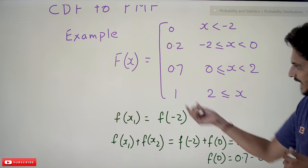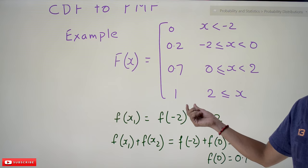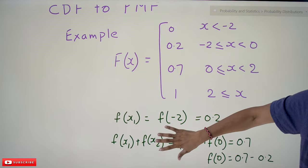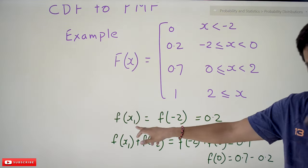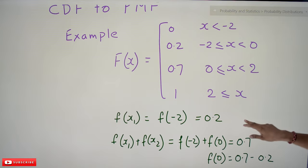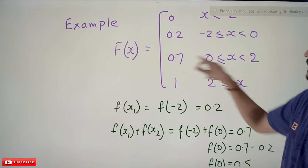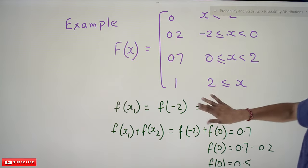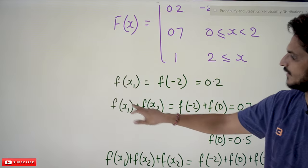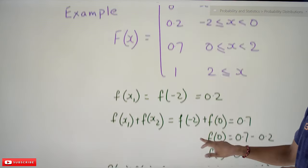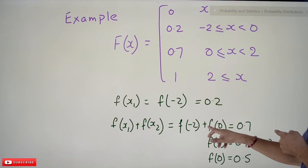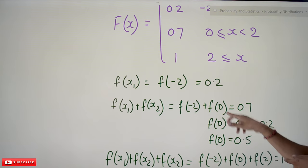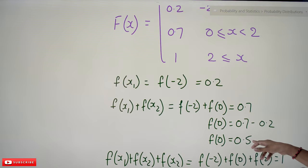From the cumulative distribution function we identify the probability mass function. The first data point is x₁ = −2, so f(−2) = 0.2. The next range is 0 ≤ x < 2 with CDF value 0.7, meaning F(x₁) + F(x₂) = 0.7, i.e., f(−2) + f(0) = 0.7. We already know f(−2) = 0.2, so f(0) = 0.7 − 0.2 = 0.5.